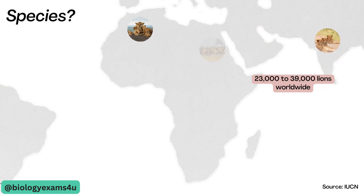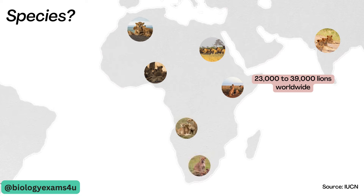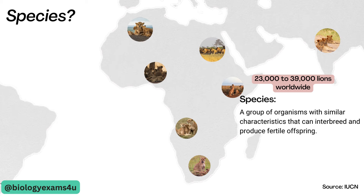All these lions all throughout the world make a species. In other words, a species can be defined as a group of organisms with similar characteristics that can interbreed and produce fertile or viable offspring. Just like all human population together makes a species.